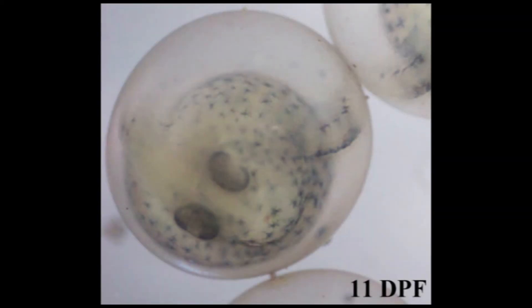At 11 days post-fertilization, the eyes of the fish are becoming dark and can be seen with a naked eye. This is referred to as the eye up stage.